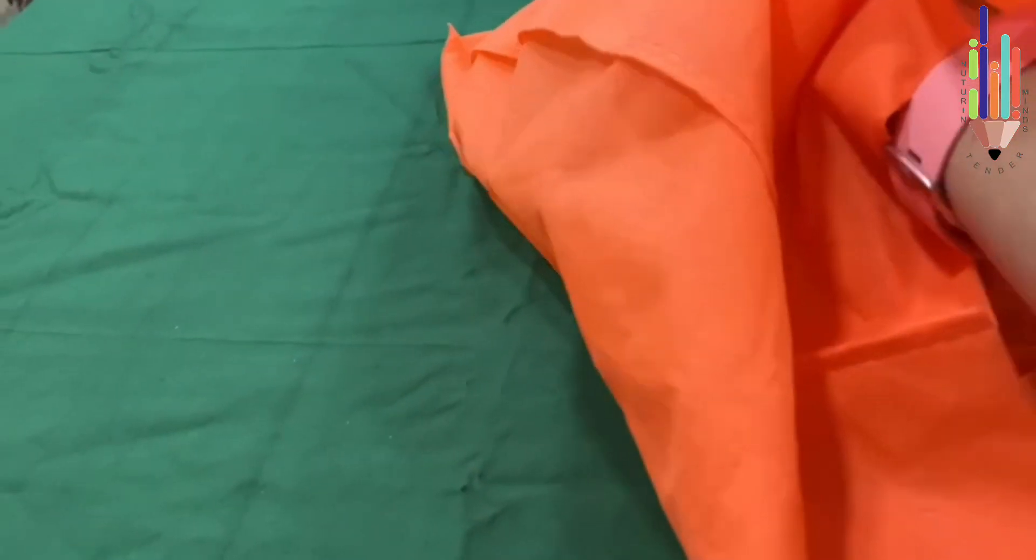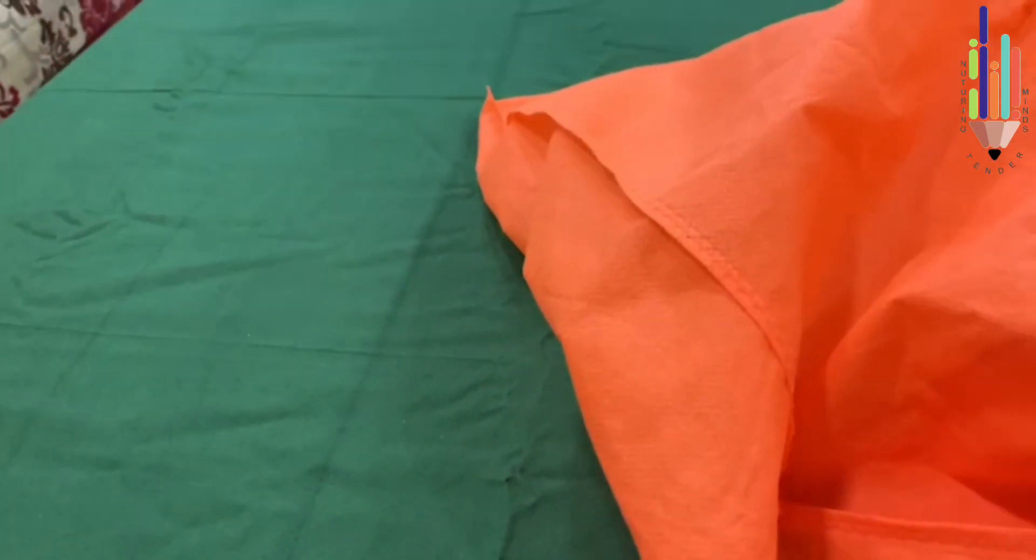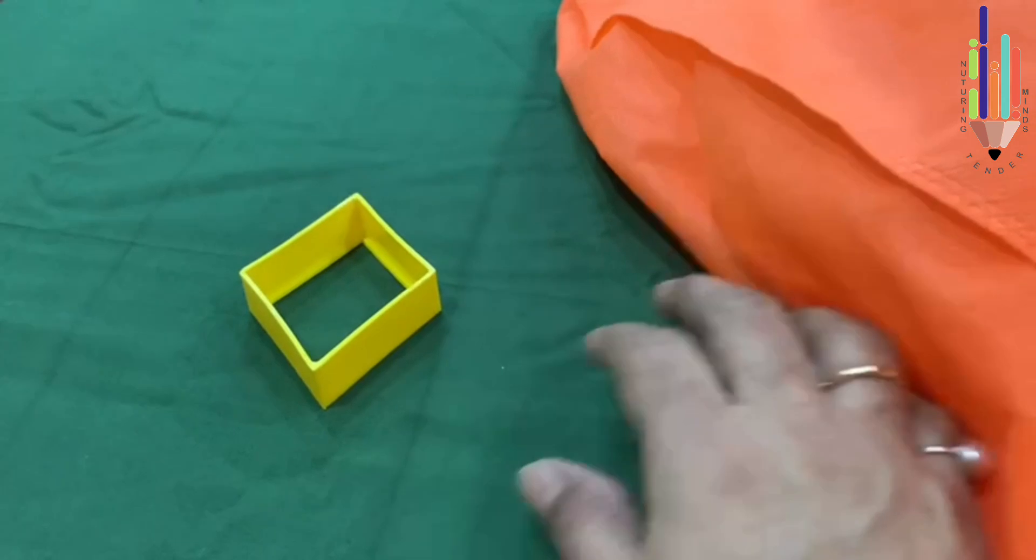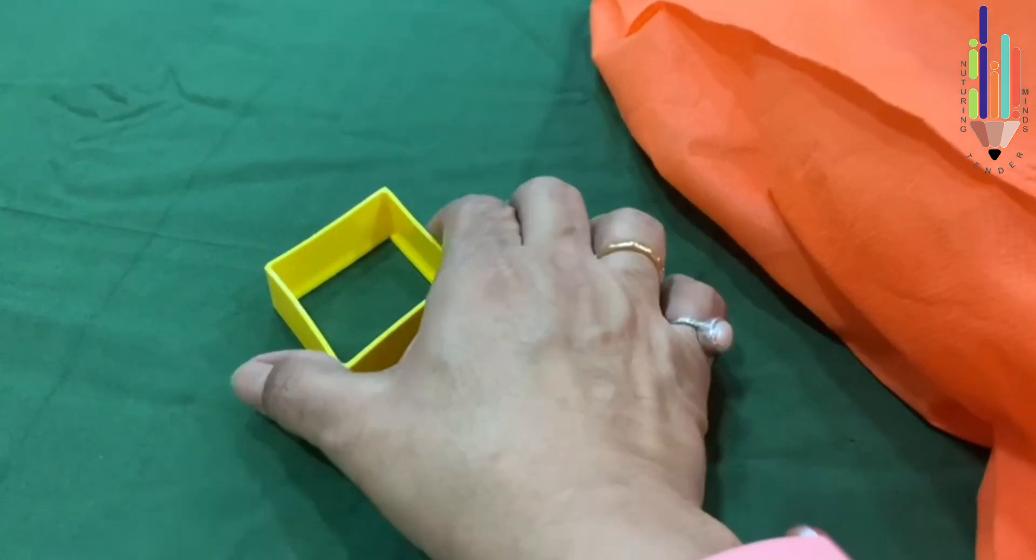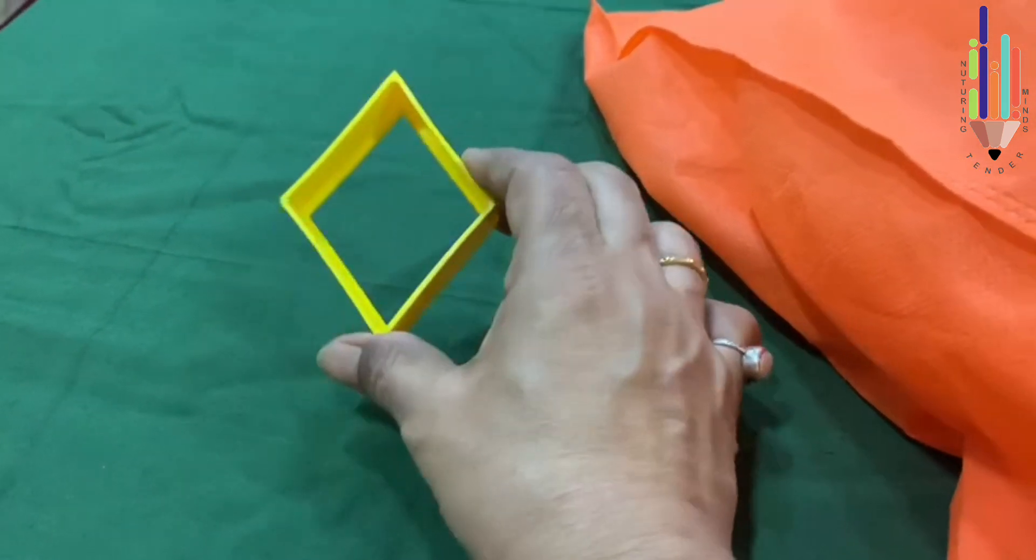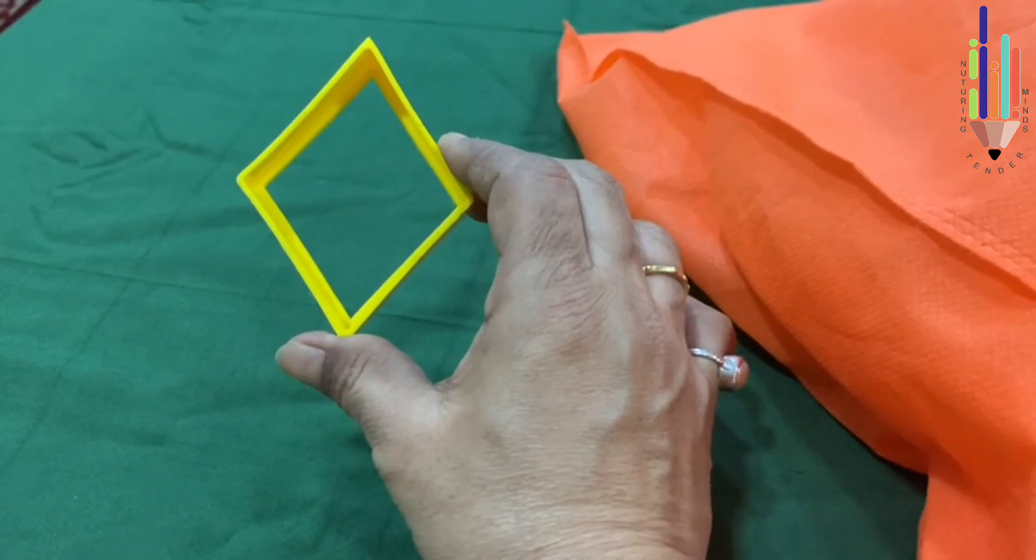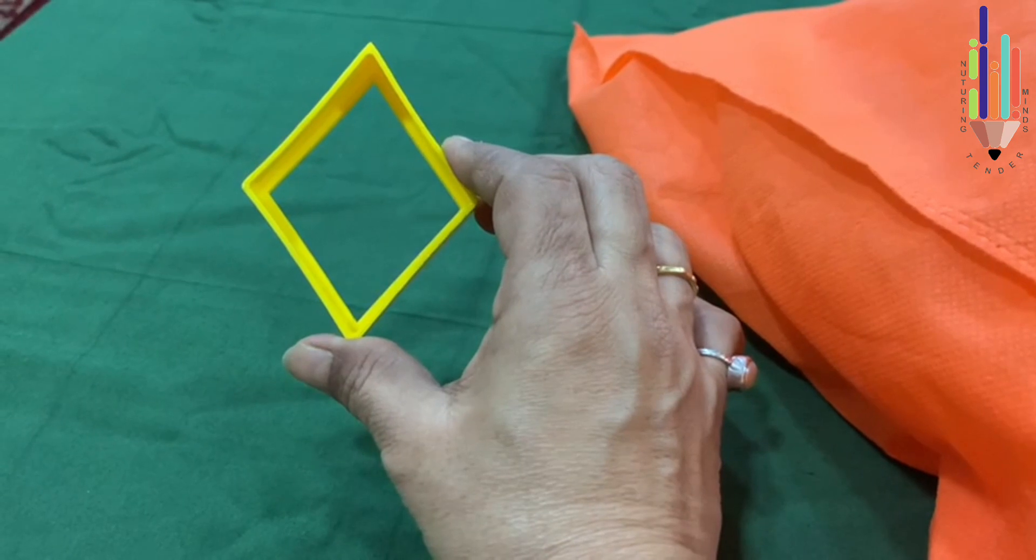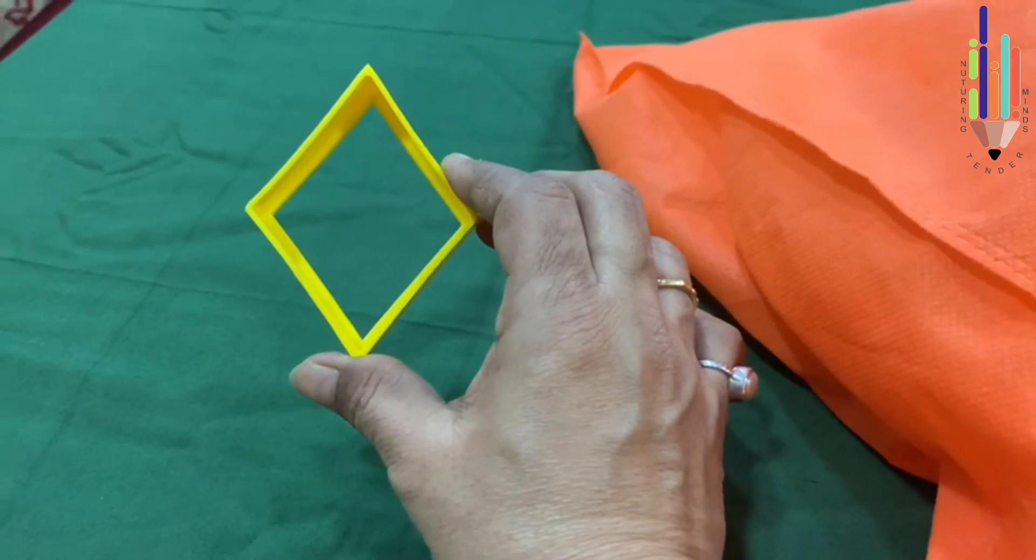I put my hand again into the bag. Let me see what I get. Here, this is also a pastry cutter and this is diamond in shape, or rhombus. It has got four sides and it is yellow in color.